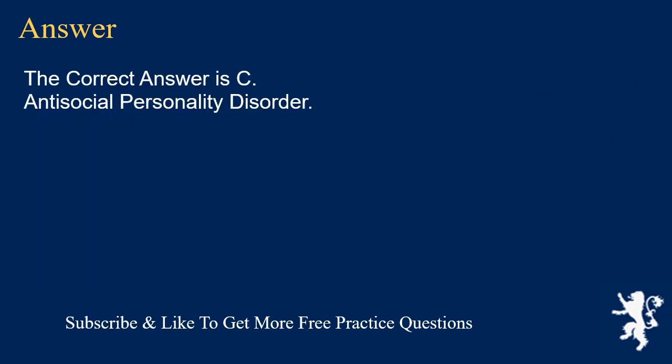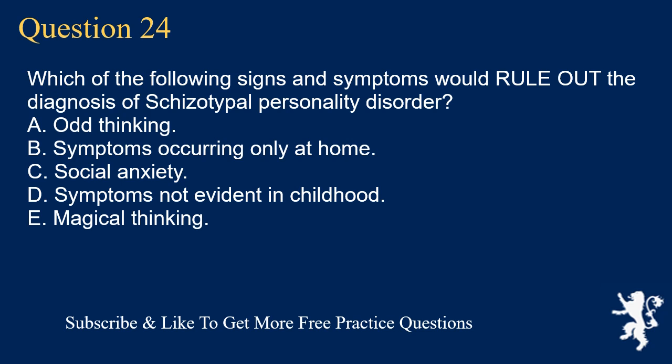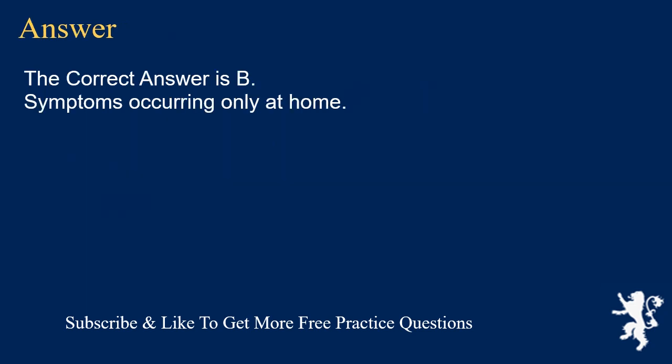Question 24. Which of the following signs and symptoms would rule out the diagnosis of Schizotypal Personality Disorder? A. Odd Thinking. B. Symptoms Occurring Only at Home. C. Social Anxiety. D. Symptoms Not Evident in Childhood. E. Magical Thinking. The correct answer is B. Symptoms Occurring Only at Home.